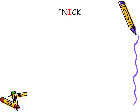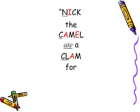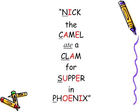Let's look at the following phrase: "Nick the camel ate a clam for supper in Phoenix." This is a very important phrase — please know this phrase. Notice the color arrangement of the name. Certain letters are underlined and they all play a very important role in being able to memorize the polyatomic ions that you're going to be responsible to know in class.